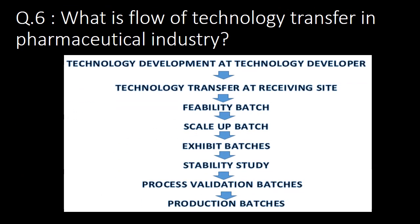What is the flow of technology transfer in the pharmaceutical industry? Technology development is done at the technology developer site, which is then transferred to the receiving site. At the receiving site, initially a feasibility batch is taken, then a scale-up batch. Further, exhibit and stability batches are taken. After successful results, process validation batches are taken, and finally production batches.